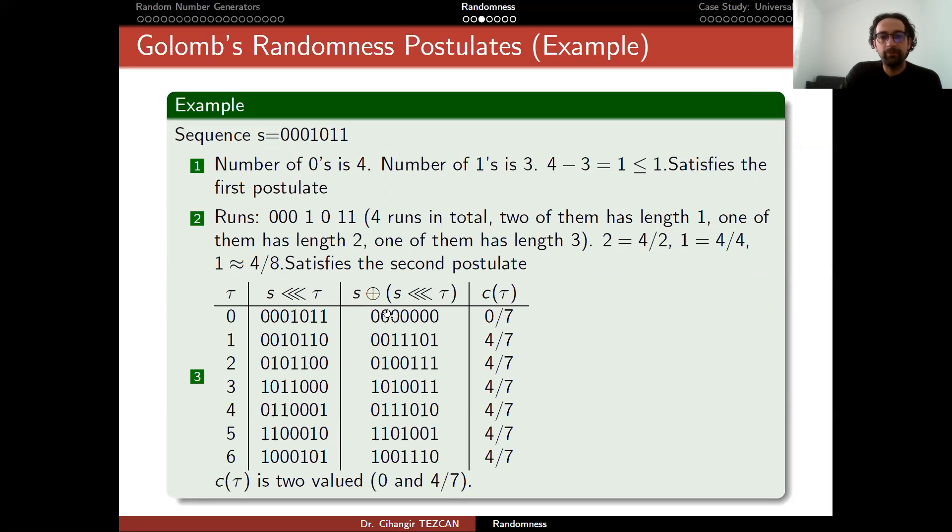So let's look at the third one. Let's calculate the autocorrelation function c tau. So when tau is zero, c rotated zero bits is the s itself. So if you XOR this with s, so s XOR s rotated zero bits is always zero. So you get zero. But the length of the sequence is seven. So actually this number is zero divided by seven, which is zero anyway. So actually in this function, this value will always be zero because if you XOR something to itself, it will be all zero sequence. So c tau will be zero.